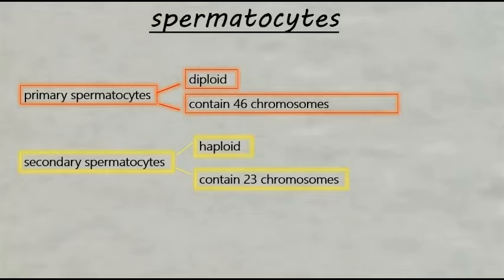The primary spermatocyte is a diploid — diploid meaning a cell that has paired chromosomes, one from each parent, which means it contains 46 chromosomes. Moving on to the secondary spermatocyte: the secondary spermatocyte is a haploid — haploid meaning a single set of unpaired chromosomes, which means it contains 23 chromosomes.